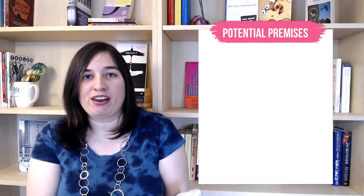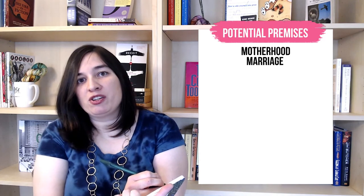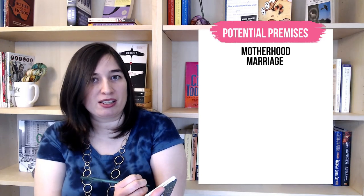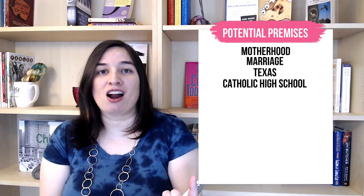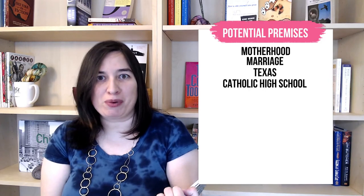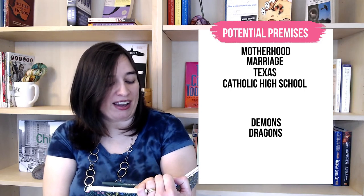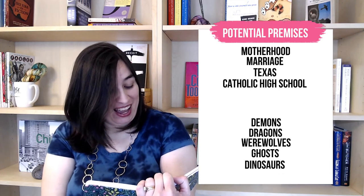Step one of generating story ideas in this way: I'm just going to take out some paper and write a list. I'm going to start with very prosaic worlds I know, like motherhood and marriage. Then I'm going to move on to worlds that may feel prosaic to me but special to someone else because they haven't experienced it — so I'll write Texas and Catholic high school. Then I'll move on to worlds outside my own experience: things I know a bit about, or things that get my juices flowing. So I'm writing down demons, dragons, werewolves, ghosts, dinosaurs, and fairy tales.